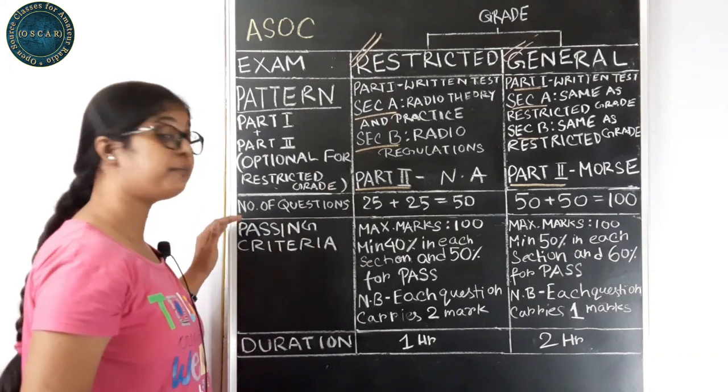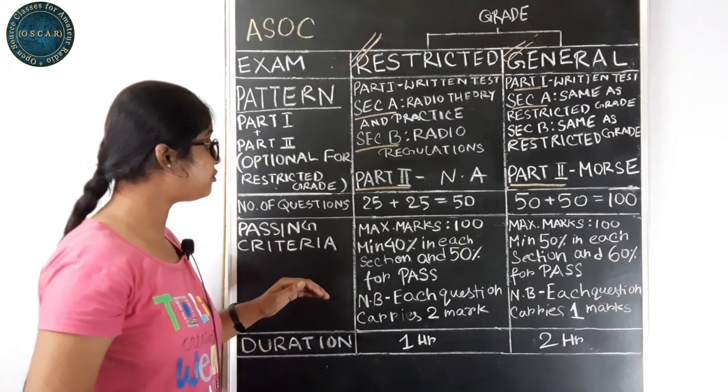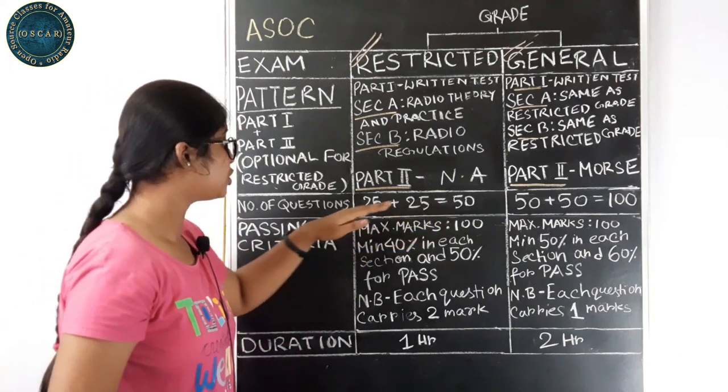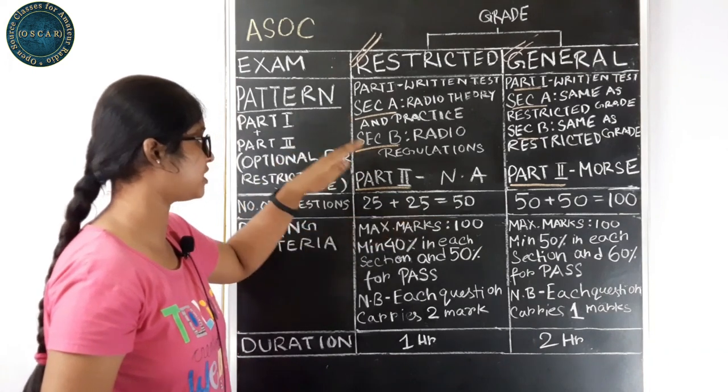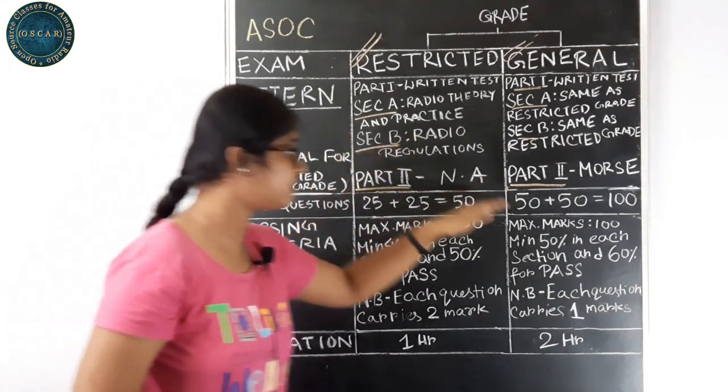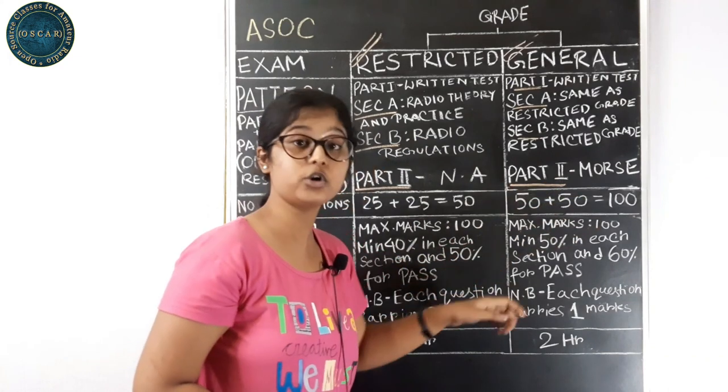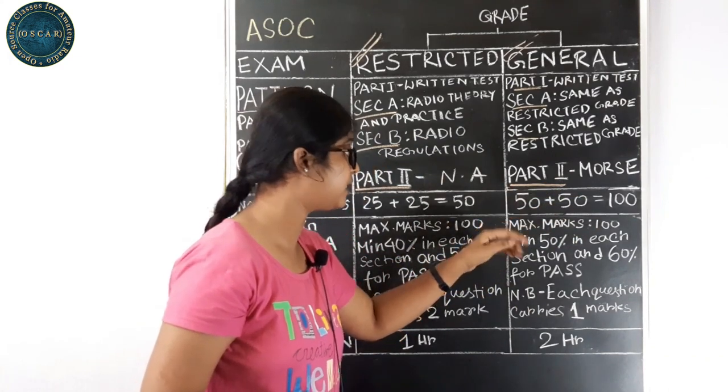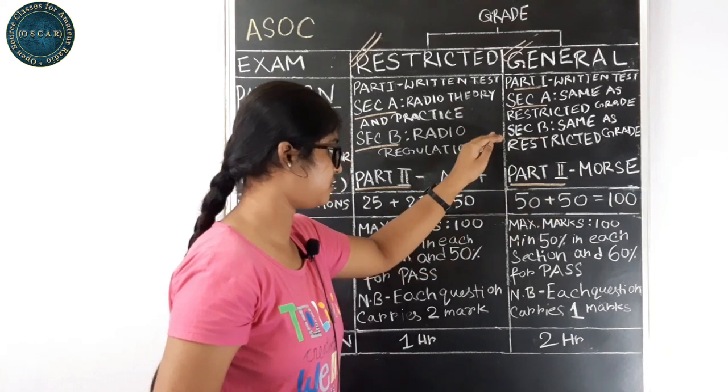Now, we will come to the number of questions. You have to attend 50 questions, 25 from section A and 25 from section B. And in General Grade, you will have to attend a total number of questions of 100, 50 from section A, 50 from section B.